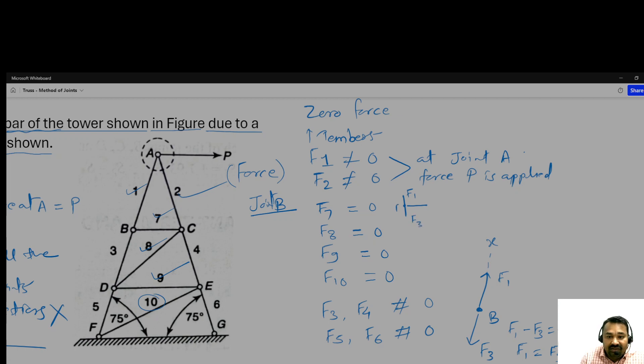Only F7 is the vertical force, and there is no known force to balance it, so F7 will be zero. Similarly for F8.